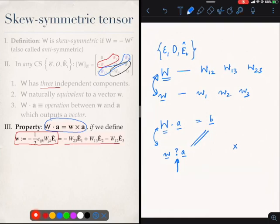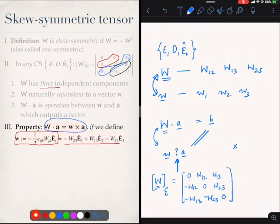Which is spelt out over here. I have simply expanded the ε_ijk's on the right side. So let me just show it in another way. Let me write down capital W in any coordinate system. It has 0, w_12, w_13, minus w_12, 0, w_23, minus w_13, minus w_23, and 0.